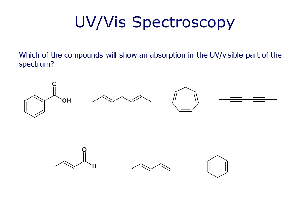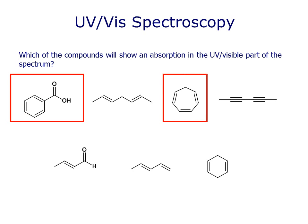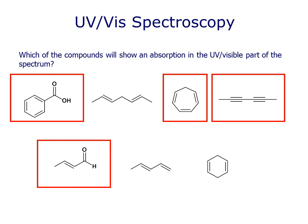Which of these compounds would you expect to show an absorption in the UV-visible spectrum? That is, which of these compounds are conjugated? Well, this benzoic acid clearly is — looking around the ring, that alternating pattern of single and double bonds. Cycloheptatriene in the middle is also conjugated through the bottom section of the molecule. And so is this diene — in this case, it's two triple bonds that are conjugated. The aldehyde down here is also conjugated; the oxygen atom is involved in that conjugated system. Note that the two unboxed compounds — the diene here and this cyclohexadiene — while they contain two double bonds, they're separated by more than one sigma bond, so they are not in conjugation.